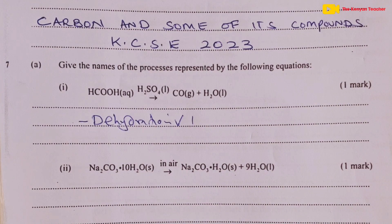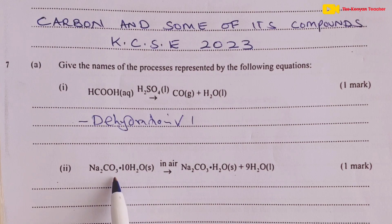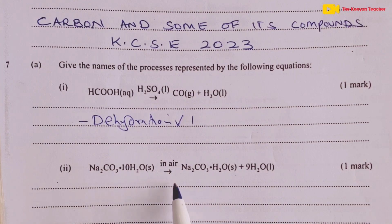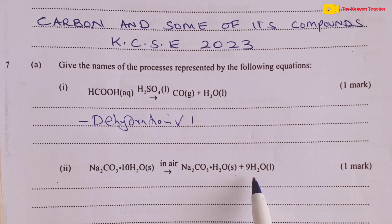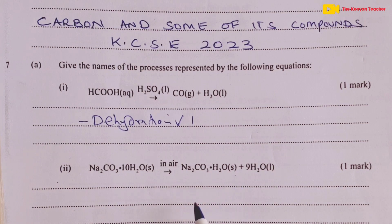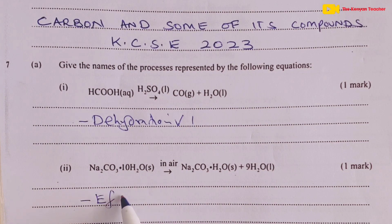Moving to the second part, we see a carbonate — a hydrated carbonate of sodium with 10 moles of water of crystallization. When we expose this carbonate to air, it loses 9 moles of its water of crystallization and we remain with only 1 mole of water in the structure of the salt.